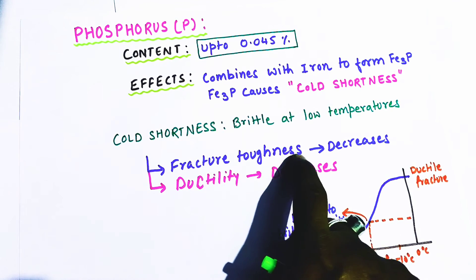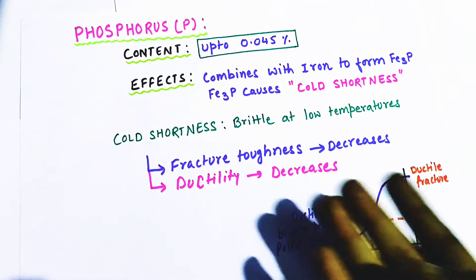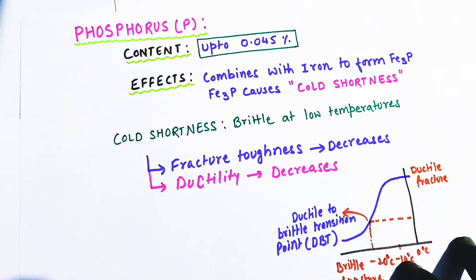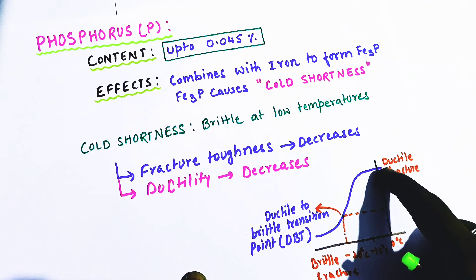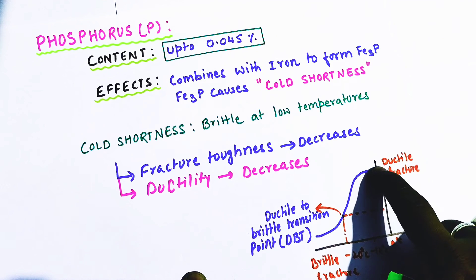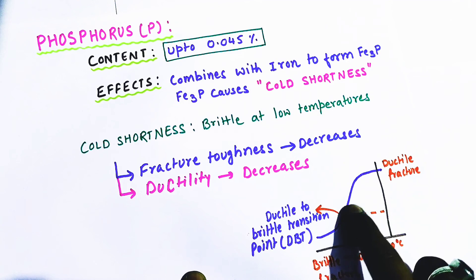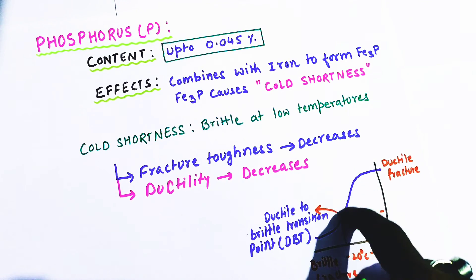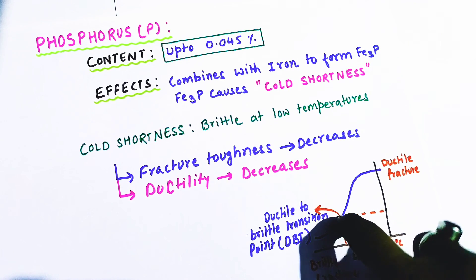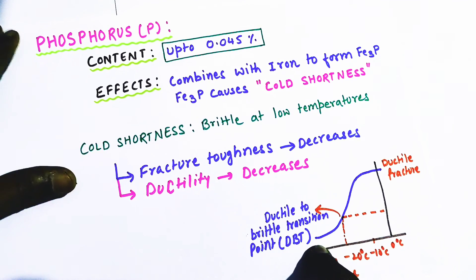Due to Fe3P, the fracture toughness decreases and ductility also decreases. Hence phosphorus is almost unwanted in steel. On a graph showing temperature from 0 down to minus 10, minus 20 degrees Celsius, as temperature decreases, toughness also decreases, and at a certain point the steel becomes completely brittle. This point is known as the ductile-to-brittle transition point, or DBT.